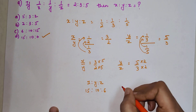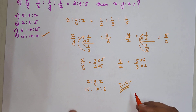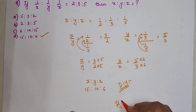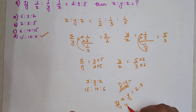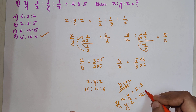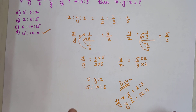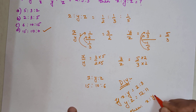Now time for your DIY question. If X is to Y is equal to 2 is to 3, and Y is to Z is equal to 12 is to 11, then you have to tell me what is the value of X is to Y is to Z.